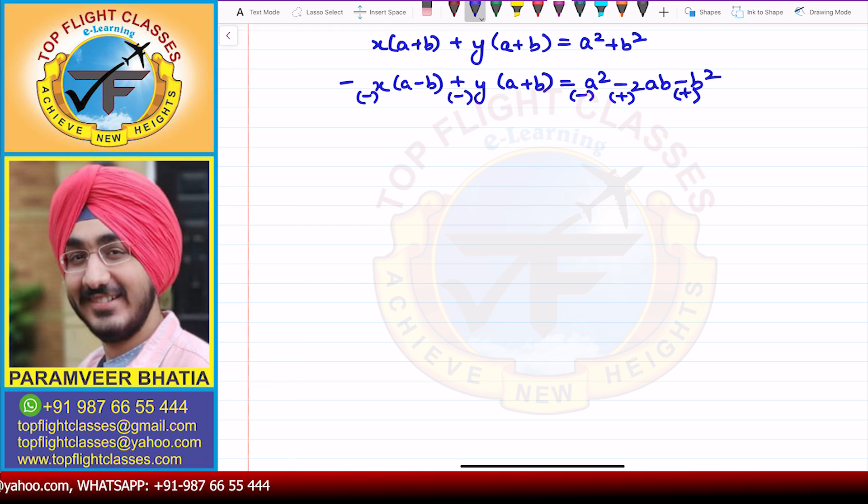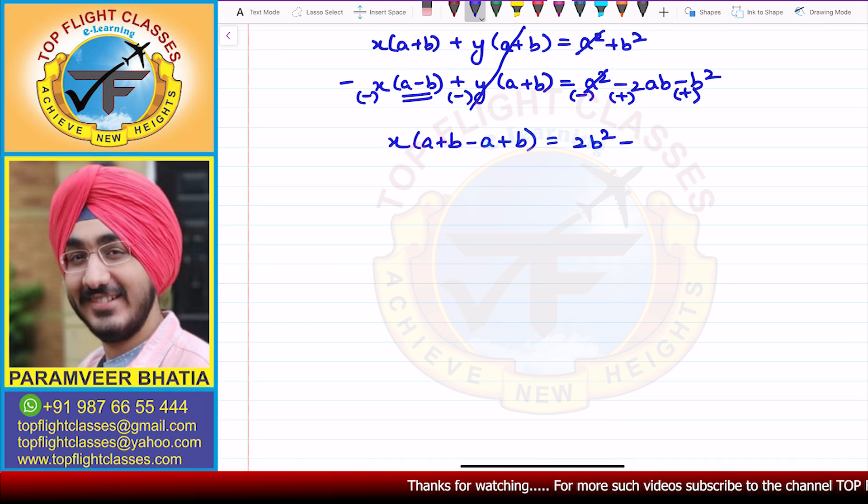We get x common under (a+b) - (a-b), because the signs change this becomes minus (a-b). The y term gets cancelled because y(a+b) minus y(a+b) is zero. From here a² and a² cancel, you get 2b² + 2ab. So you get 2bx = a+b, which means x = a+b.